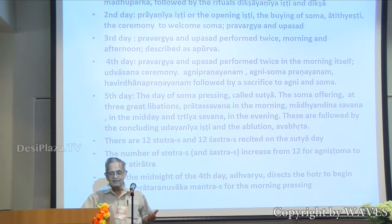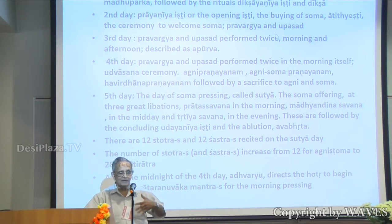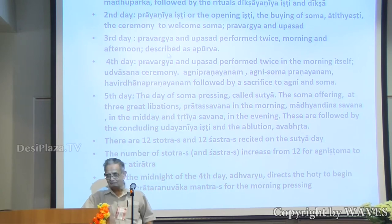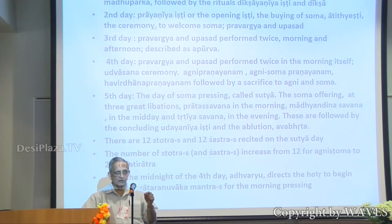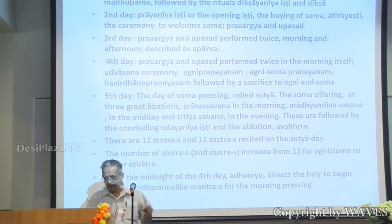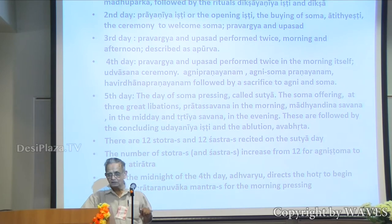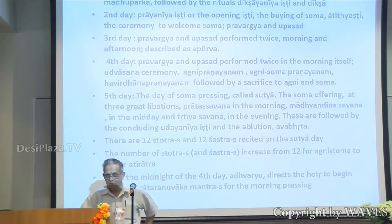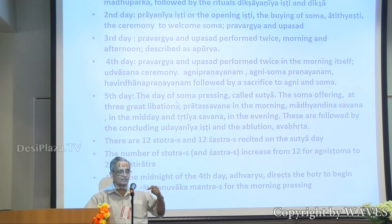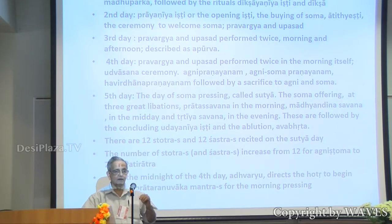Jyotishtoma lasts for five days. The first day is the appointment of the ritviks, then the madhuparika, followed by deekshahana. Second day: pravargya. Third day: pravargya and upasadhana repeated again. Fourth day: more, and that second day begins the first starting ritual, called prajaniya ishti. The last day has a udainya ishti — the completing ceremony — followed by avabrata snana that completes the Soma yajna. The prajaniya and vijena are the beginning and end of the Soma yajna. The fifth day is the most important day, when the Soma creeper is pressed.